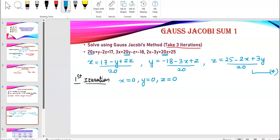So, whenever you start with Gauss-Jacobi's method, you will start with x, y, z. How many other variables are there? All 0s. So, now observe if I put x, y and z as 0, I'll get the first value of x is 17 over 20. My value of y is negative 18 over 20 and my value of z is 25 over 20.